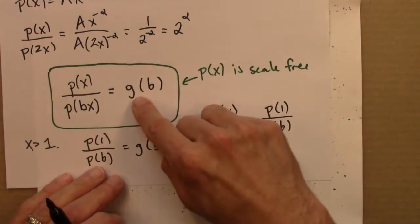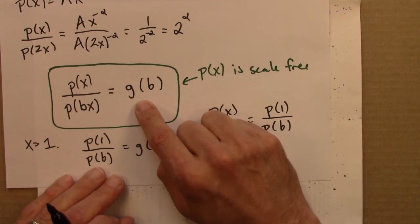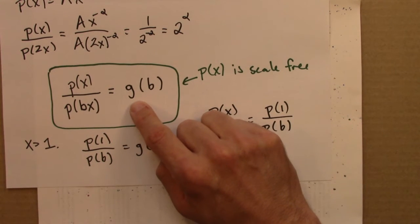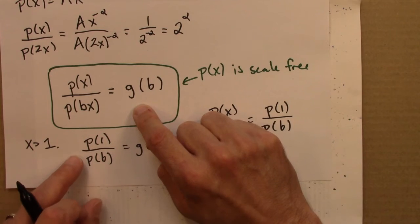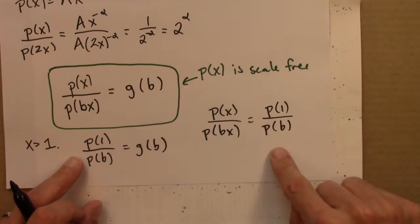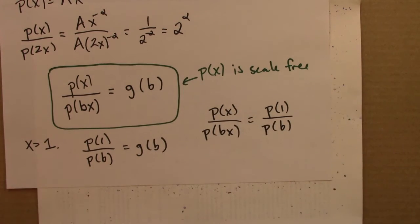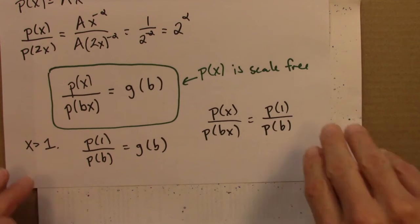So that's good news because I didn't really know what this G function was. I just said it's some function. The main thing about this is that it doesn't depend on x, just on B. So now I've gotten rid of this unknown function. So hopefully that feels like progress.